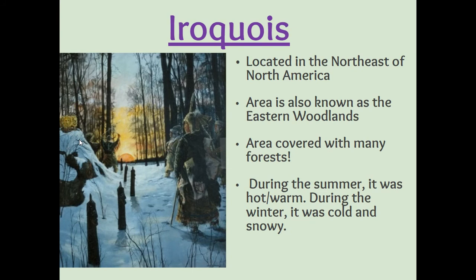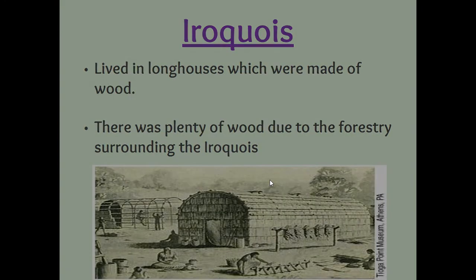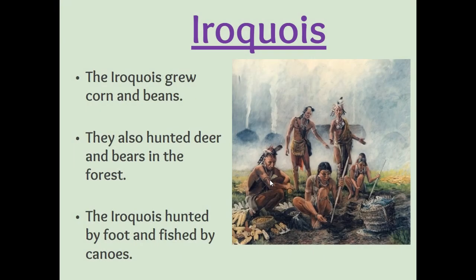Finally, we have the Iroquois in the northeast, also known as the Eastern Woodlands. There are lots of forests in that area. Because of that, they live in longhouses made of wood. They grow corn and beans, kind of like the Pueblo, but they also hunt deer and bears.